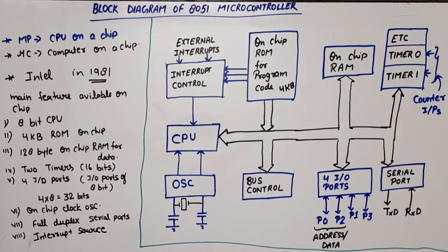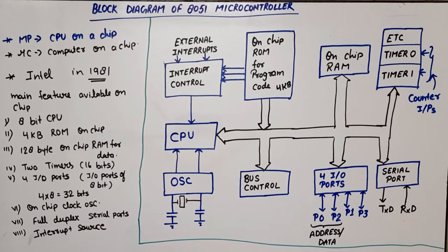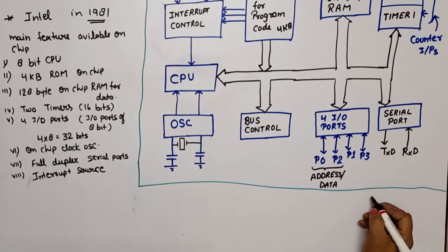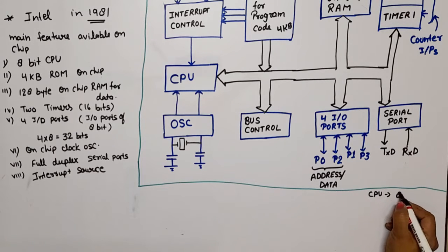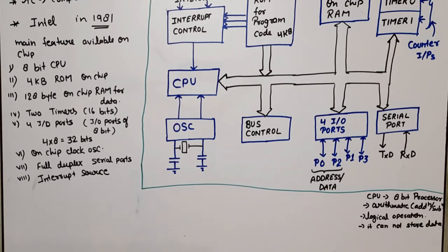Now let's start working through the components one by one. You all know that a microcontroller means computer on a chip — it includes memory, peripheral devices, and timers all on chip. When asked for a block diagram explanation, mention these points. Starting with the CPU: it is an 8-bit processor that performs arithmetic and logical operations. It cannot store any data. The on-chip ROM is used for program code — it is read-only, permanent memory where we write the program.